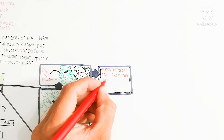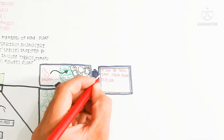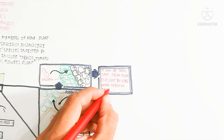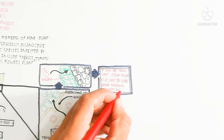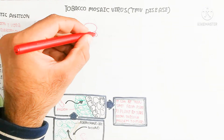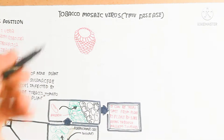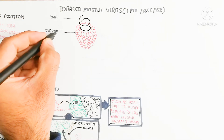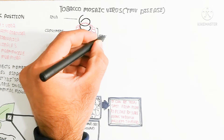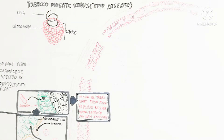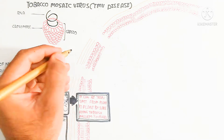Now we will understand the tobacco mosaic virus structure. TMV is a rod-like structure and contains RNA — it is an RNA virus. The red color shown in the figure represents the capsomere, and the totality of capsomeres is known as the capsid. Inside the capsid is the RNA. In this way, the virus can enter into the cytoplasm through rupturing of the cell from the cell wall.